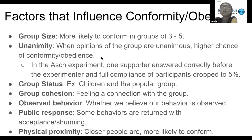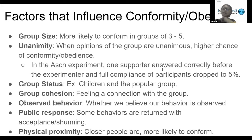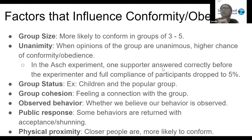When everyone is saying the same answer, there is a higher chance that other people will also put that same answer. In the Asch experiment, one supporter answered correctly before the experimental subject, and full compliance of participants dropped to 5%. Once that one person answered the right answer before the experimental subject, the subject was able to choose the right answer instead of conforming with everyone else's choices.